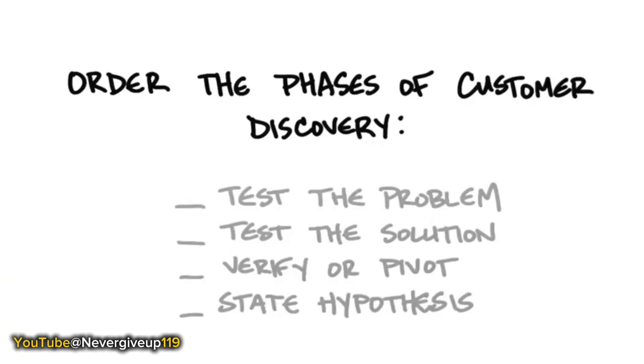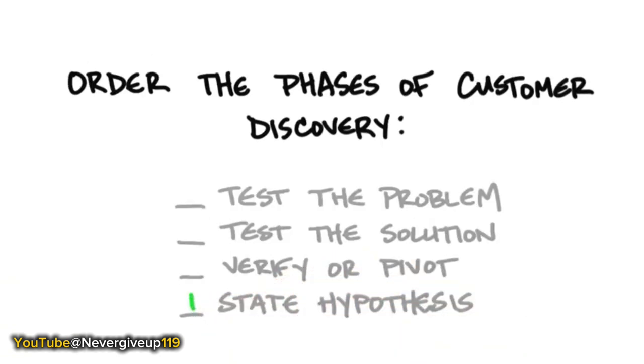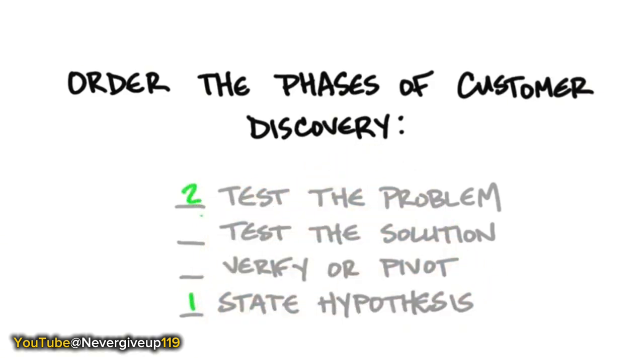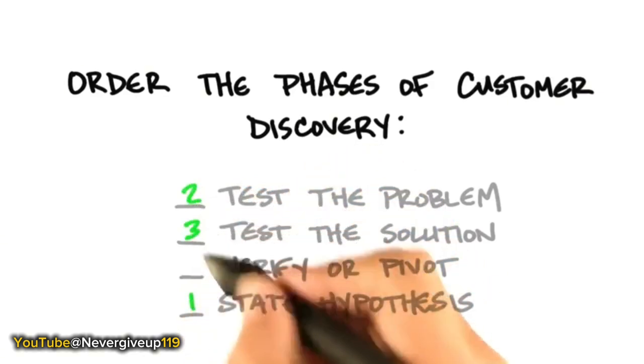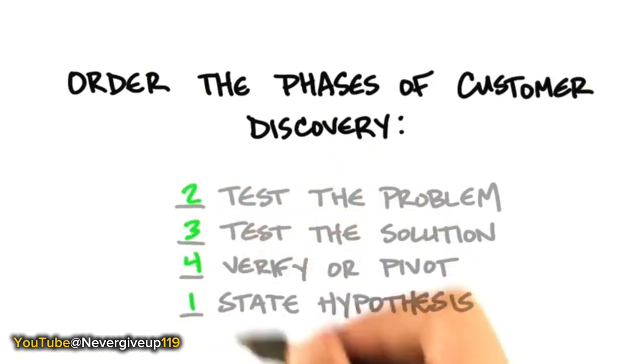Once you find a repeatable and scalable business model, you go into the execution phase of customer development - creating end-user demand and scale called customer creation, then building the organization for constant and rapid execution. The four phases of customer discovery start with stating your hypotheses, testing the problem, testing the solution, and then verifying or pivoting.